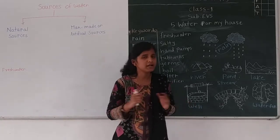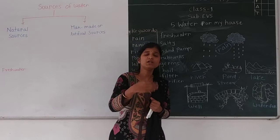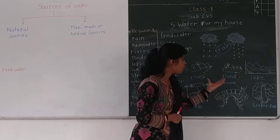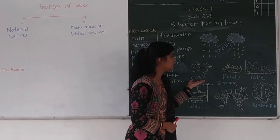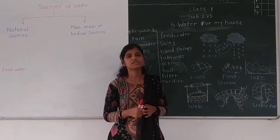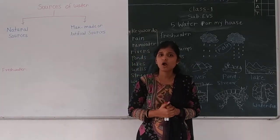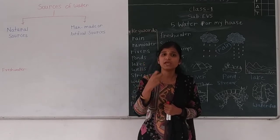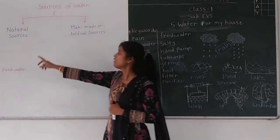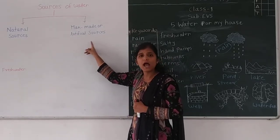In the last section we studied that the main source of water is rain, and the water that comes from rain is known as rain water. All this rain water goes through rivers, ponds, lakes, streams, and waterfalls. We also studied the sources of water — from where we get water. There are two sources of water.